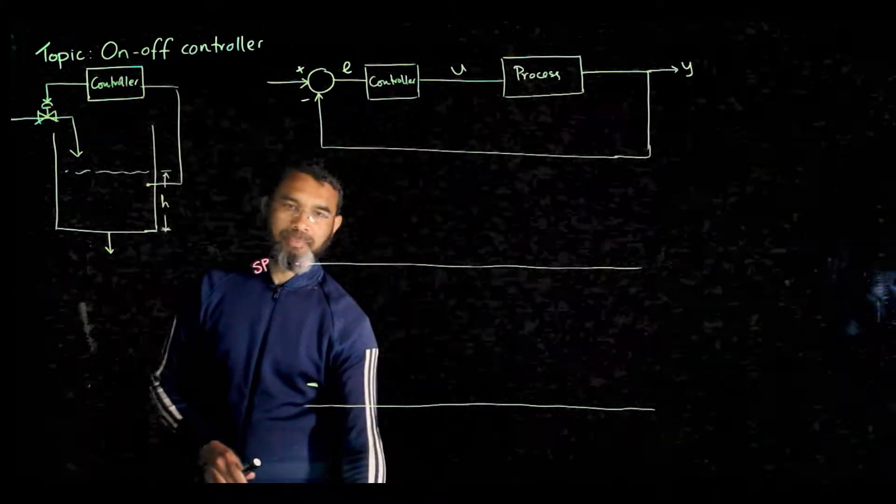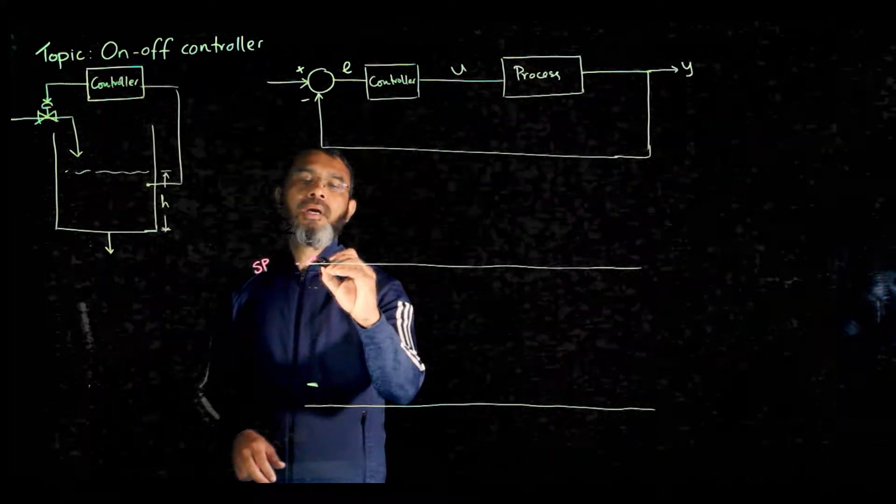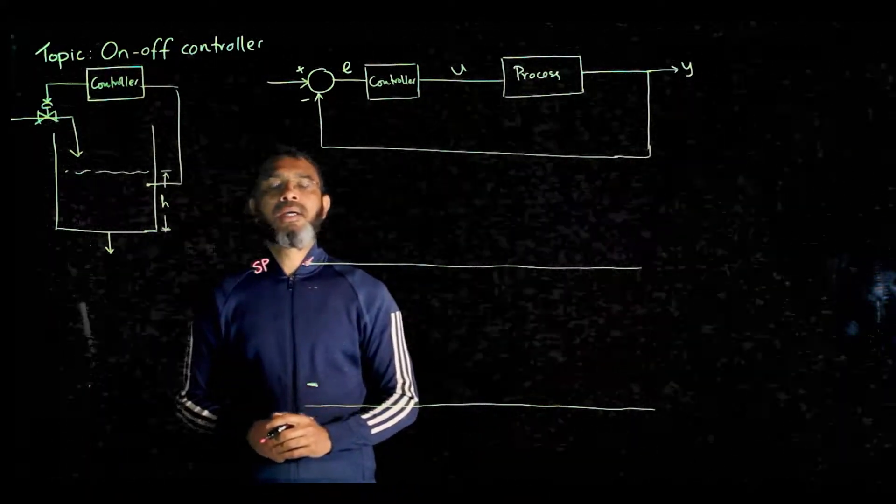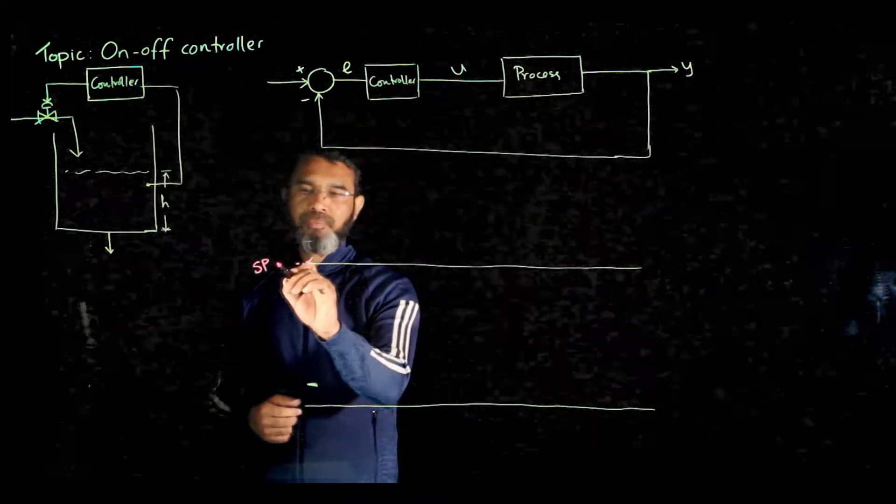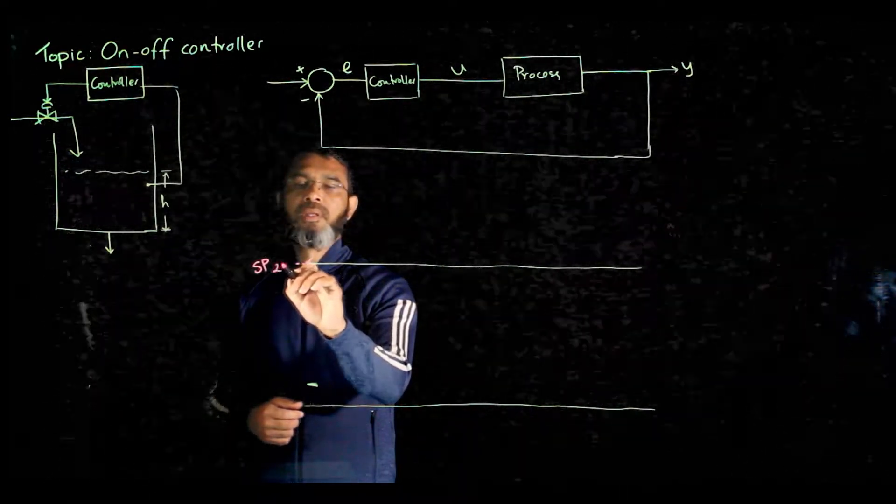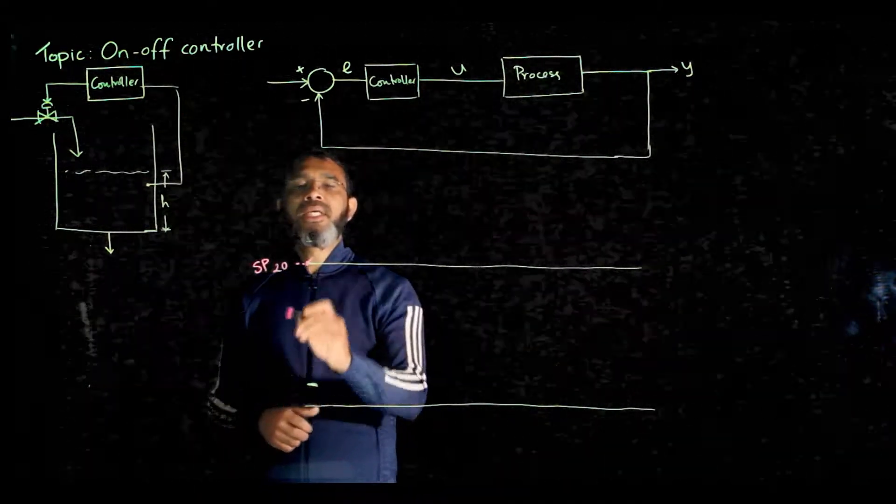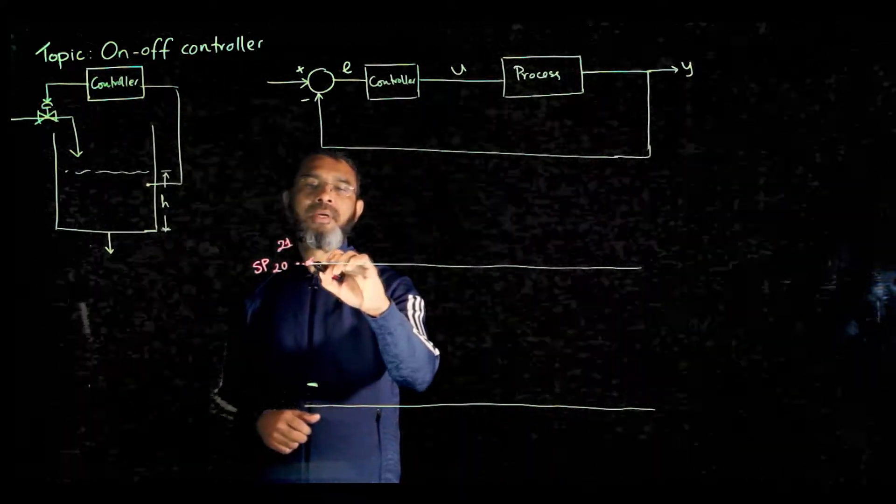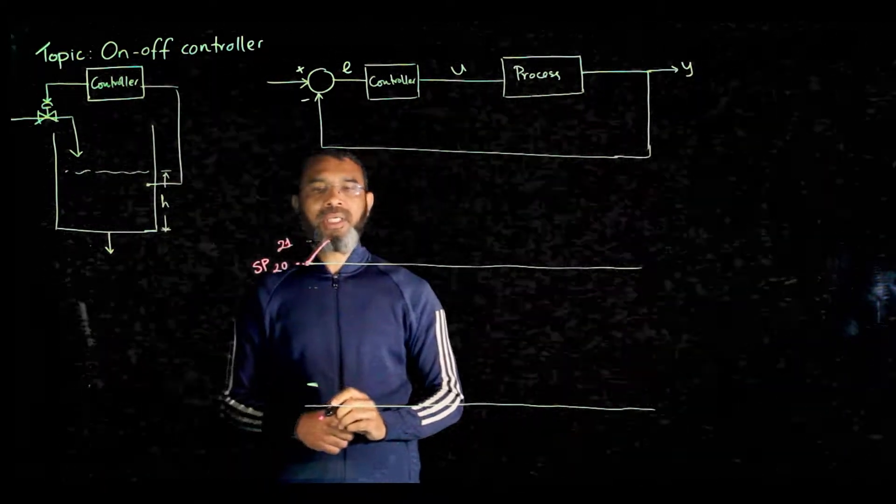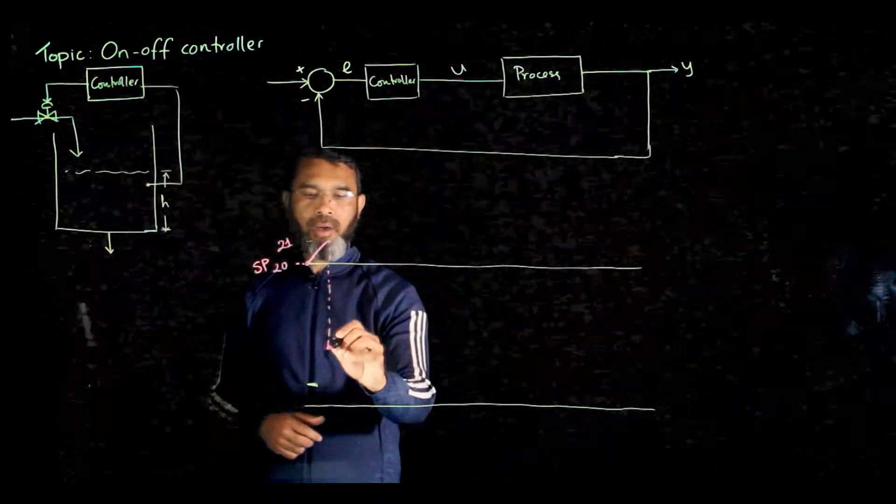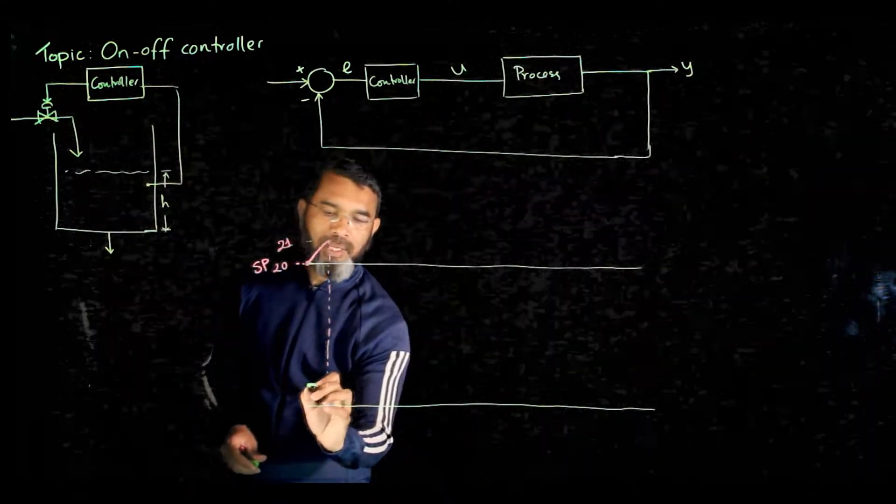Now when the valve is open, the level will keep on rising. When do you want the valve to be closed? Suppose you have a setting here at 20 units, and you may have some tolerance that when it goes to 21 units you want to close the valve. So the level will go up like this and at this point you want the valve to turn off because the level has crossed the desired value. When the valve turns off, the level will start to drop.